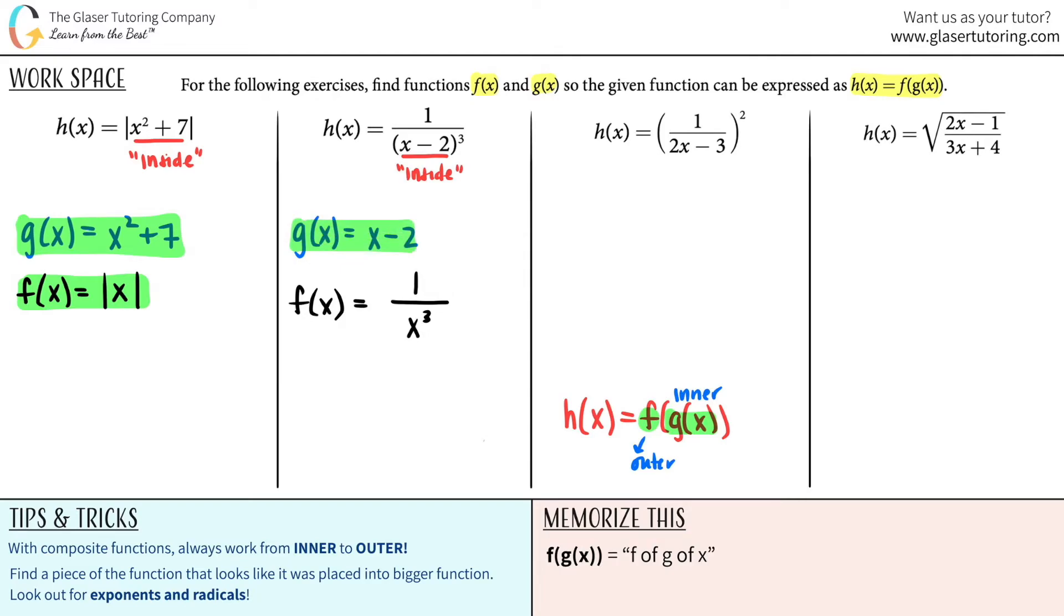Halfway through the problem. We're flying through these. Next one. H of x equals 1 divided by 2x minus 3 all squared. Is there anything that is trapped inside? I see parentheses here. Big parentheses, which means that this whole thing is trapped inside those parentheses. So now this whole fraction is inside.